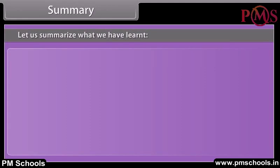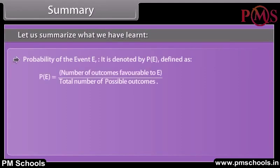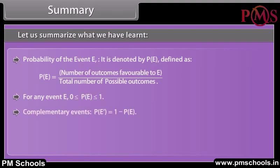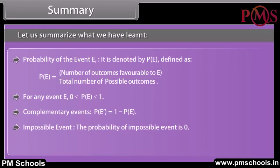Summary. Let us summarize what we have learned. Probability of event E is denoted by P(E), defined as P(E) = number of outcomes favorable to E divided by total number of possible outcomes. For any event E, 0 ≤ P(E) ≤ 1. Complementary events: P(not E) = 1 − P(E). Impossible event: The probability of an impossible event is 0. Sure event: The probability of a sure event is 1.